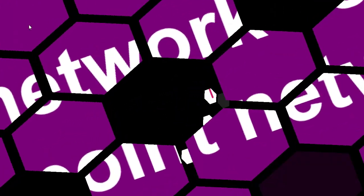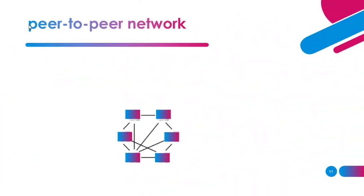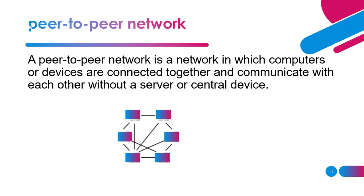First of all we have the P2P network. In a P2P network, each of the computers or devices is connected together and they can communicate with each other without any server or central device. In a client-server network there is a client and a server, and all devices are connected to the central device known as a server, whereas in a P2P network each computer is connected with each other and there is no server involved.